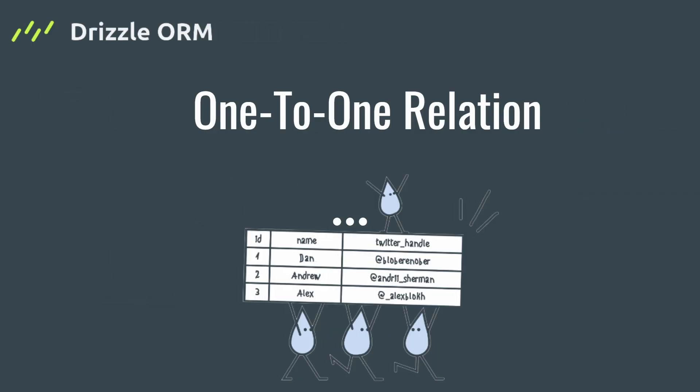So in this way we can create a one-to-one relationship with Drizzle ORM. In the upcoming sections I'll teach you how to create one-to-many and many-to-many relations between tables. Make sure to subscribe to the channel and hit the bell button to get informed about the next video. If you liked the video please hit the like button — that makes me really happy and gives me more energy to create these tutorials for you. Have a nice time!